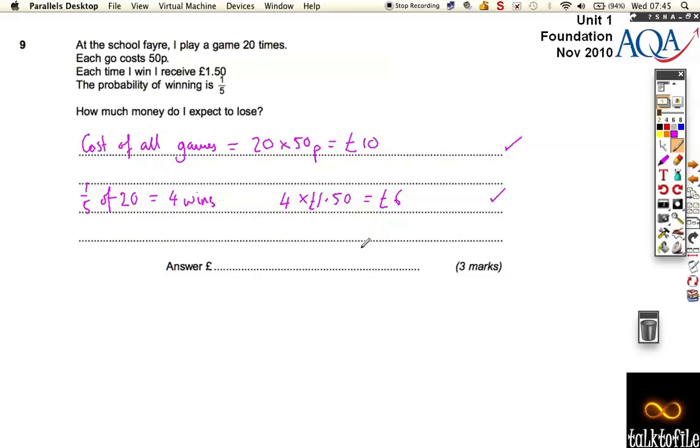So one mark for each of those little bits. Now, we've got to work out how much money do I expect to lose. Well, I've paid £10, and I've only got £6 back, so I must lose £4.